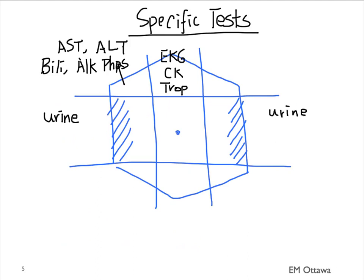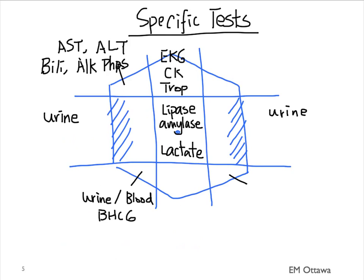In the umbilical area, if we're worried about pancreatitis, we can order lipase or amylase. If we're worried about ischemic gut causing generalized pain, we should order a lactate. In the lower abdomen, for patients with right or left lower quadrant pain, in female patients we need to ensure they are not pregnant. For patients with PID or tubo-ovarian abscess symptoms, swabs need to be done during the pelvic exam. In those with suprapubic pain, a urine dip is often needed to rule out an infection.